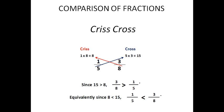How to compare fractions — this is a breeze. Simply form the criss and the cross: eight times one is eight; five times three is fifteen. Fifteen is bigger, and fifteen is on the side of three-eighths, so three-eighths is greater than one-fifth. You can also rewrite this as one-fifth is less than three-eighths.